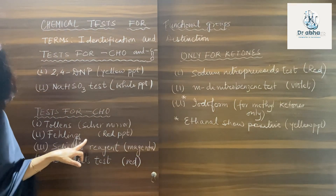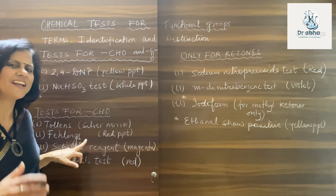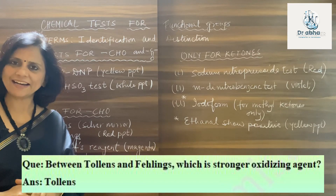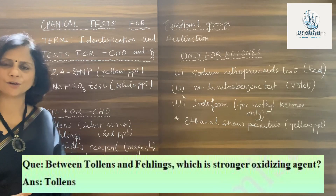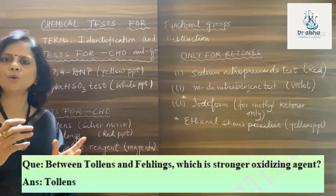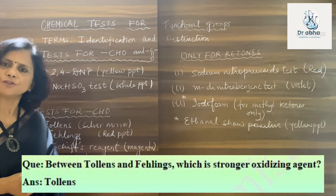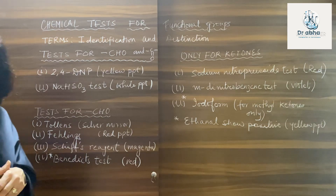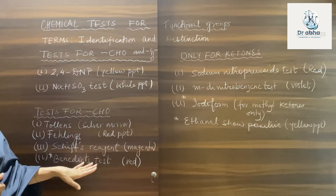Fehling's test is shown positive only by aliphatic aldehydes. Fehling's is a slightly weaker oxidizing agent than Tollens, so it only acts on aliphatic aldehydes — it does not act on aromatic aldehydes like benzaldehyde. When you treat any aliphatic aldehyde with Fehling's solution, you get a reddish-brown precipitate of Cu₂O. Next, Schiff's reagent gives a magenta color for all aldehydes — aliphatic as well as aromatic.